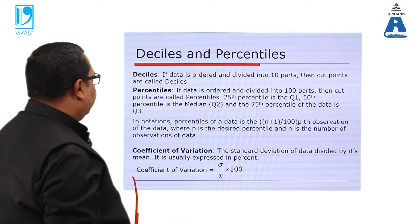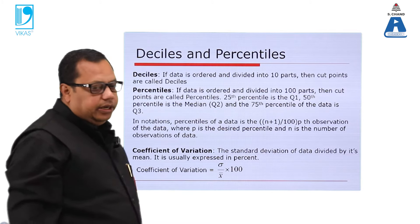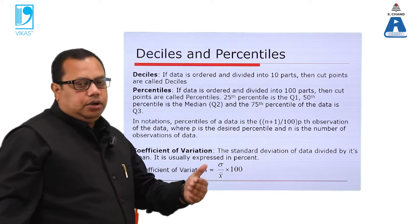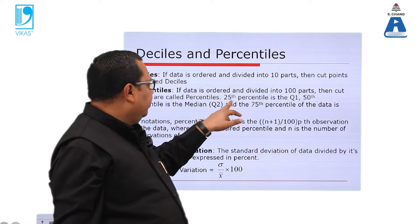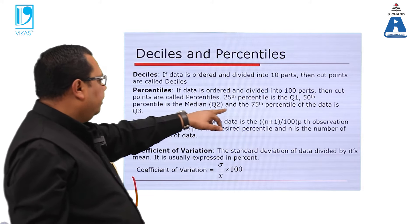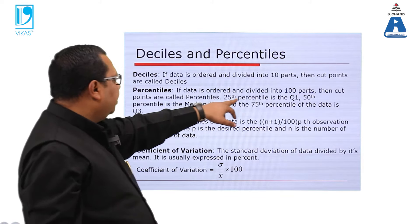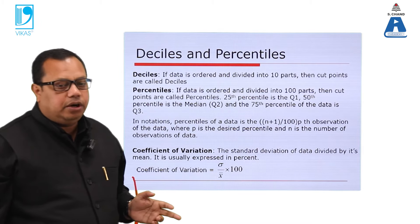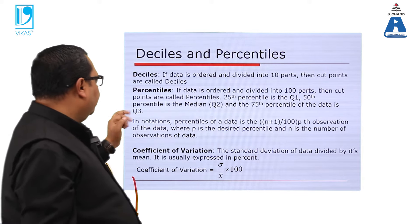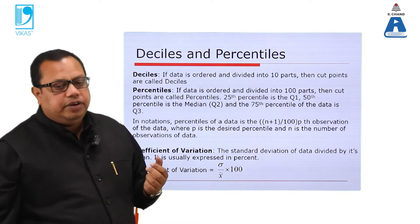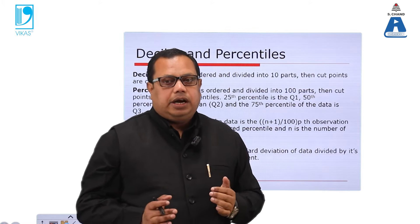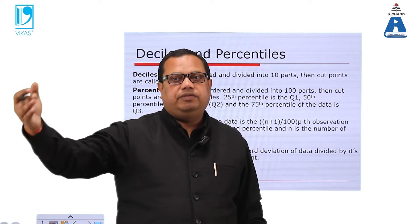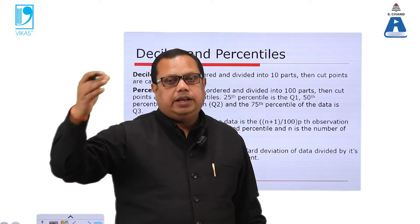For percentiles, if the data is divided into 100 parts, the cut points are called percentiles. The 25th percentile is Q1, the 50th percentile is Q2, and the 75th percentile is Q3. So we analyze the entire length of the data and break it into four categories: 0–25, 25–50, 50–75, and 75–100, where the value at 50 acts as the median.